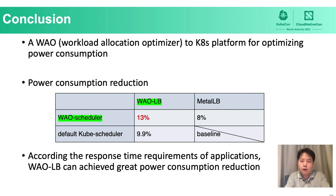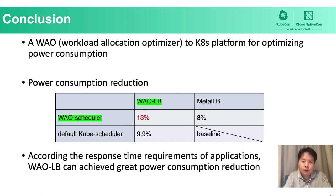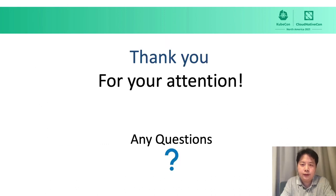In conclusion, this talk presented WoW, a Workload Allocation Optimizer that extends the Kubernetes platform to realize power consumption reduction. WoW uses WoW Scheduler for pod allocation and WoW LB for task allocation, and both can be used to reduce data center power consumption. When using both together, WoW achieves about 13% power consumption reduction compared to the default Kube Scheduler and Metal LB. In addition, WoW LB provides an application priority control mechanism so it can meet the response time requirements of each application while obtaining power consumption reduction under such priorities. Thank you for joining us, and I'd like to take any questions.